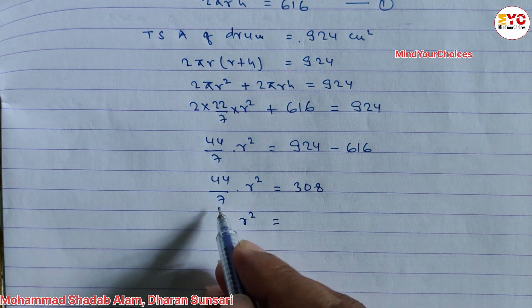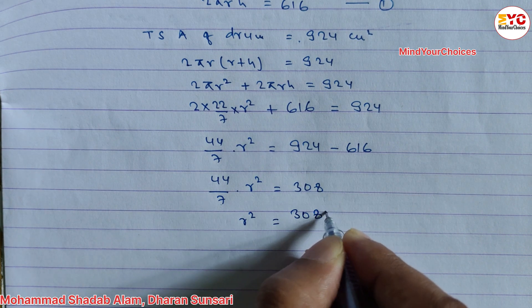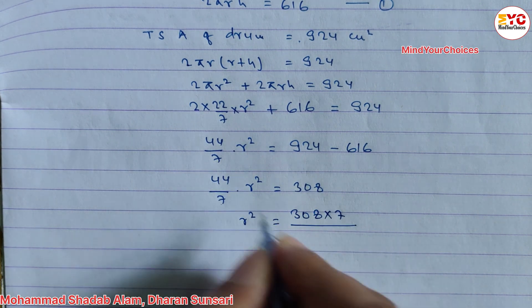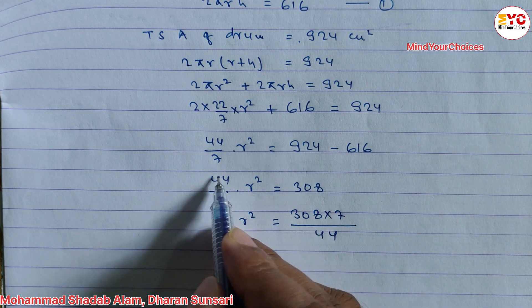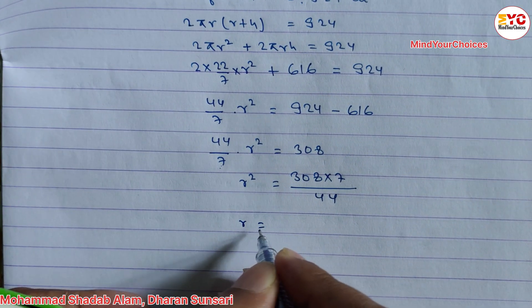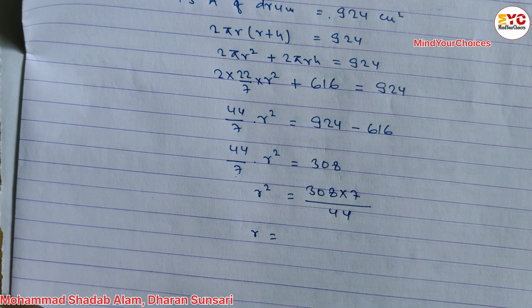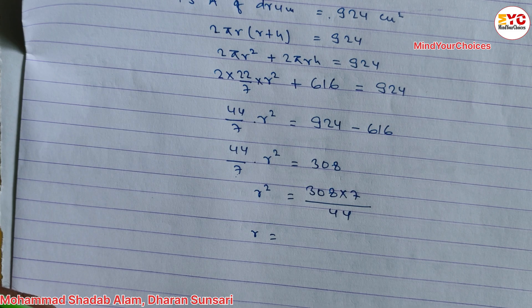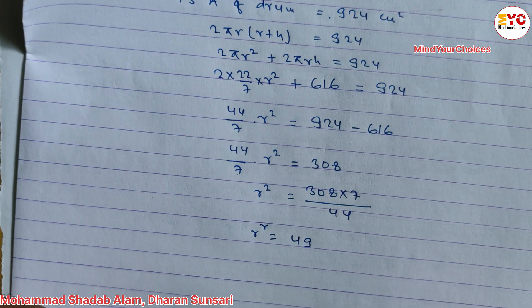So r² = 308 × 7 ÷ 44. Calculating: 308 × 7 = 2156, divided by 44, we get 49. Therefore r² = 49.